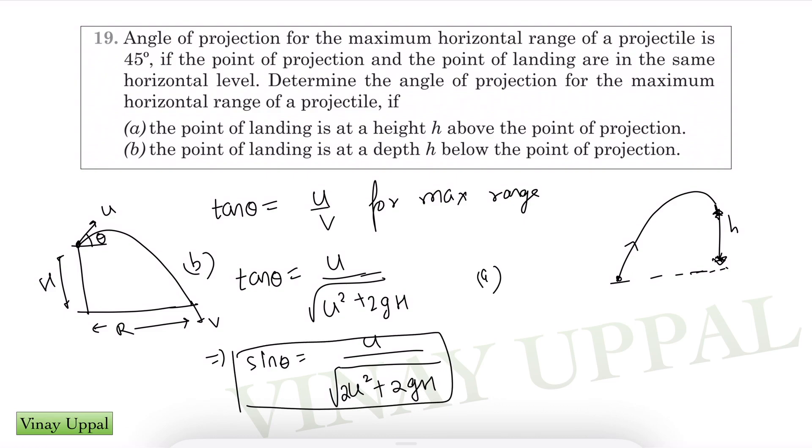For part a, it's very straightforward. All you have to do is change h to minus h because now instead of descending, the particle is now ascending. And so I am just going to write directly the final answer: 2u squared minus 2gh. That's it for maximizing the range.